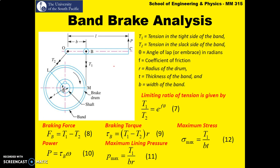We will look at band brake analysis. We have a schematic of a band brake. The bands are attached to the lever at points O and B. There is a rotating drum with a certain portion of the band wound around it. That angle is the angle of lap, sometimes referred to as the wrap angle, and it must be in radians. F is the coefficient of friction, R is the radius of the drum, T is the thickness of the band, and B is the width of the band.